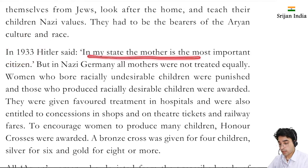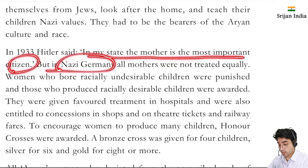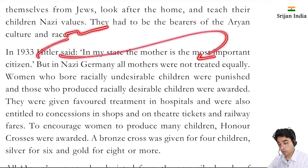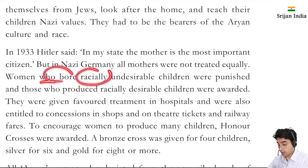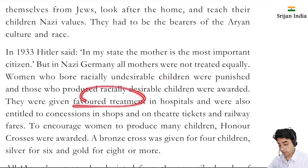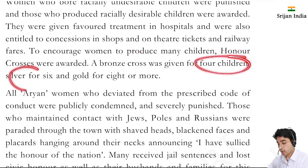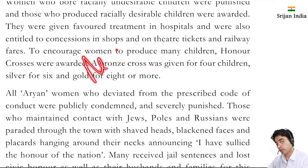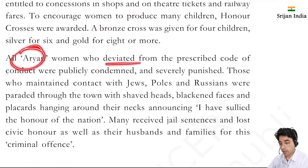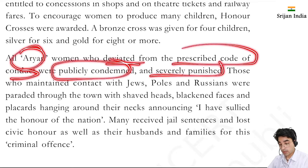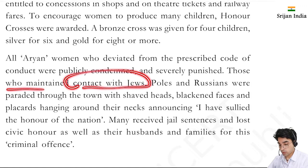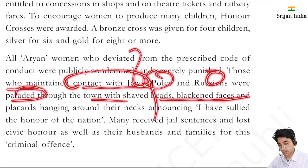In 1933 Hitler said: 'In my state the mother is the most important citizen.' But in Nazi Germany all mothers were not treated equally - there was a big difference between what they said and what they did. Women who bore racially undesirable children were punished. Those who produced racially desirable children were given awards, favored treatment in hospitals, and concessions in shops, theater tickets, and railway fares. To encourage women to produce many children, honor crosses were awarded - bronze for four children, silver for six, and gold for eight or more. All Aryan women who deviated from the prescribed code of conduct were publicly condemned and severely punished. Those who maintained contact with Jews, Poles and Russians were paraded through town with shaved heads.